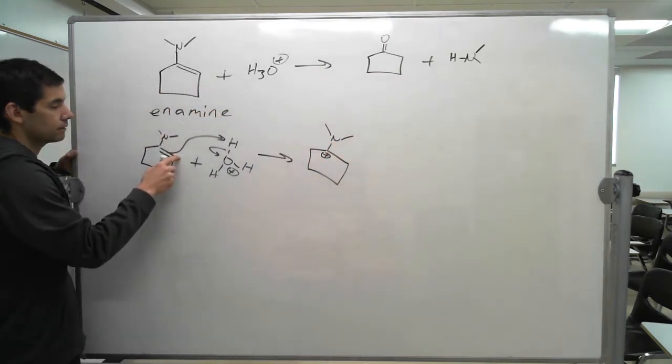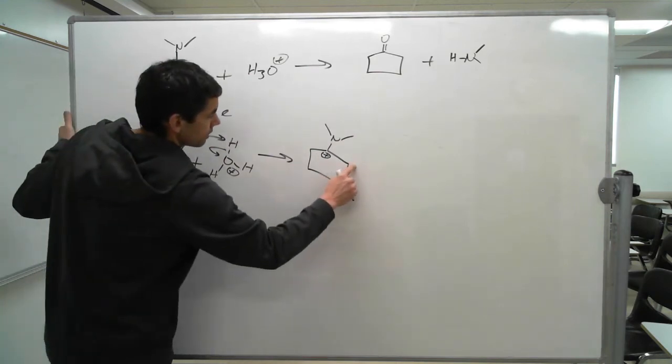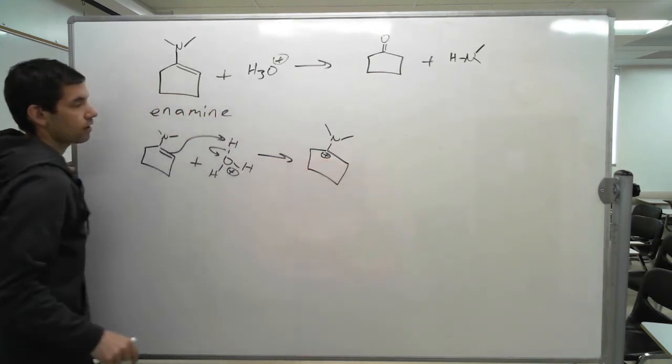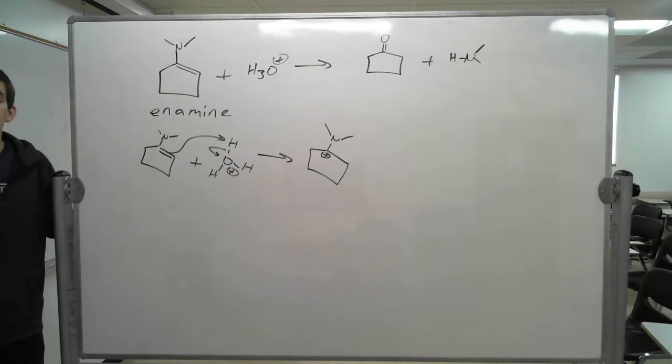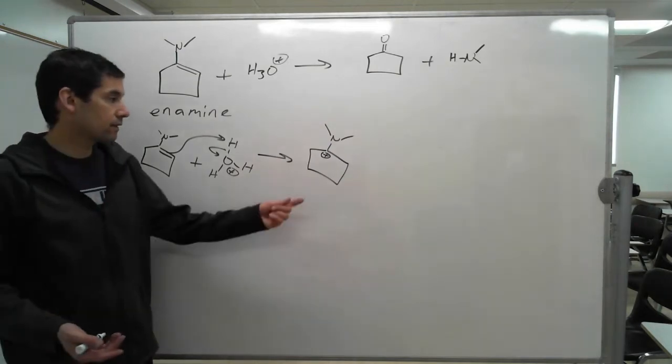And by protonating this pi bond, we're going to put the hydrogen here, which I can draw in, and we generate a carbocation. Once we see that carbocation, we have to think about what can we do with that. You have two options with that carbocation. We have a couple options.